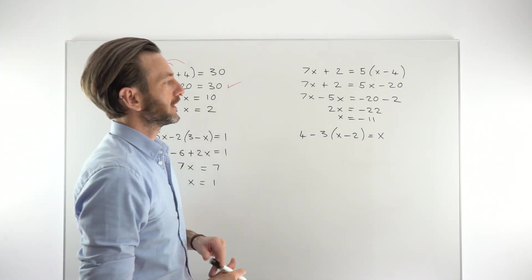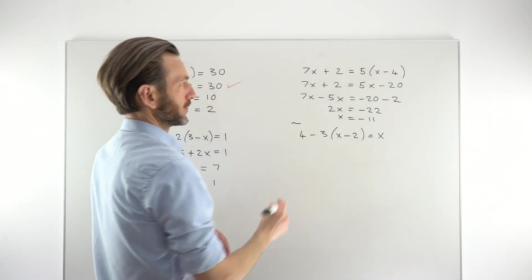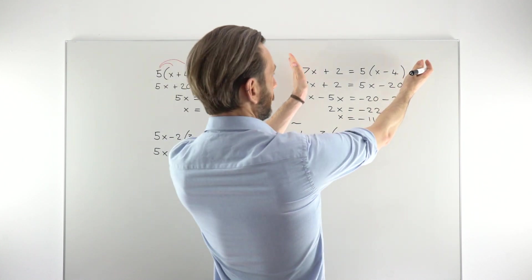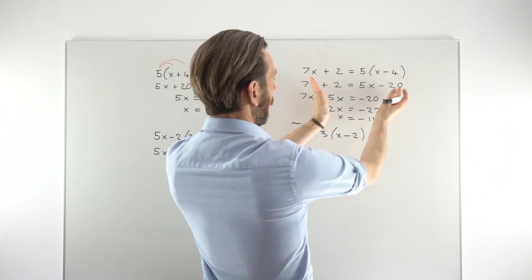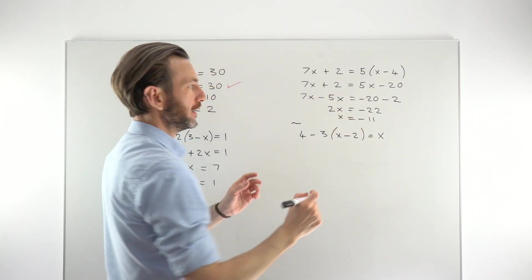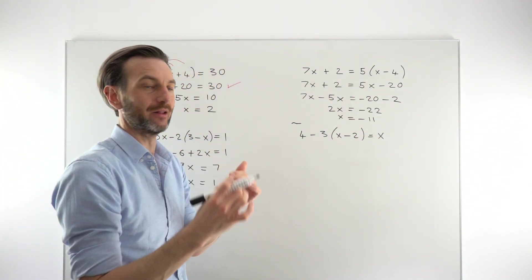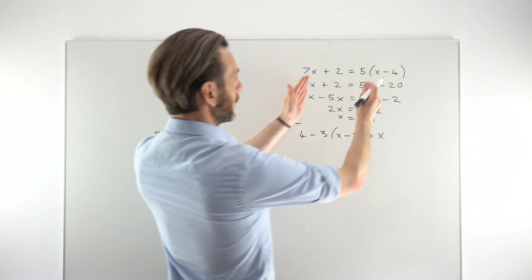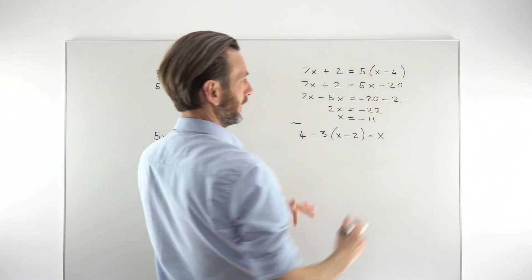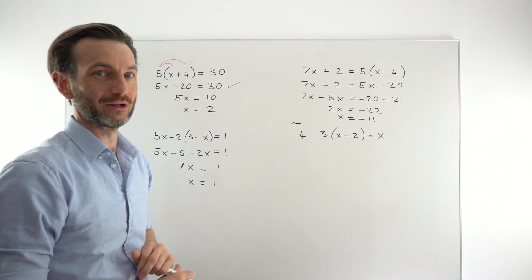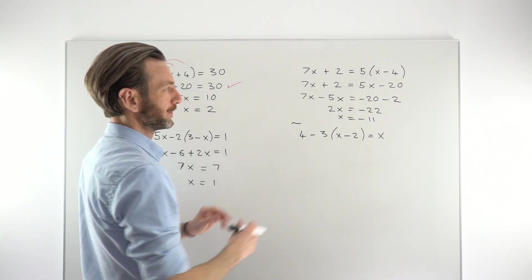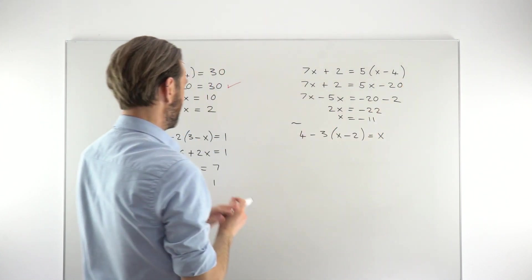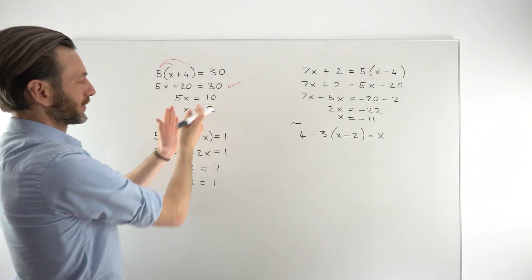So one thing to keep an eye on with equations is that they should basically be kind of filtering down to that x value at the end. They should be getting smaller, kind of. Each line is getting smaller as you start grouping the terms together, combining the like terms. If you find that your equation somehow is getting fatter, then you're overcomplicating. You're introducing things that don't need to be there and something's going wrong. So you should kind of taper in towards the end, like this guy here or this guy here.